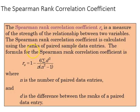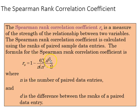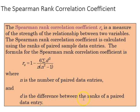The formula for the Spearman rank correlation is as follows: rs is going to be equal to 1 minus 6 times the sum of d squared over n times n squared minus 1. n is the number of paired data entries, and d is the difference between the ranks of a paired data entry.